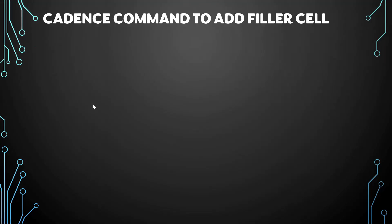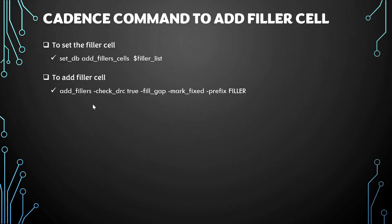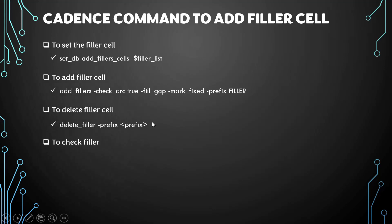The Cadence command to add filler cells: first, set the filler cells using the command 'setdb add_filler_cells' followed by the list of filler cells. Then add the filler cells using the command 'add_fillers' followed by switches as per design requirements, such as 'check_drc true', 'fill_gap', and a prefix. The prefix is useful because when deleting filler cells later, you use 'delete_fillers -prefix <filler>'. To check filler cells, use the command 'check_filler', which checks for locations with missing filler cells and generates a detailed report.